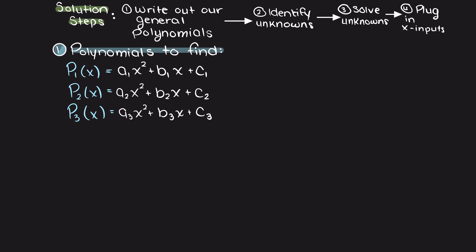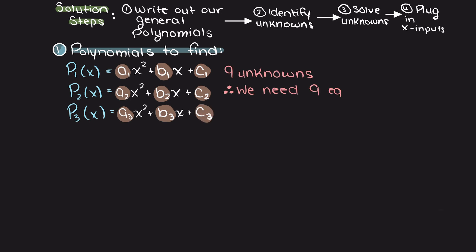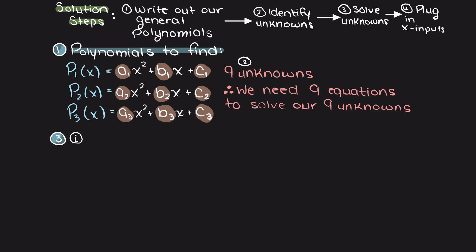Our second step is to identify our 9 unknowns, which is simply all the coefficients which I will highlight here. Now we need to find our 9 independent equations to solve for our 9 unknowns.